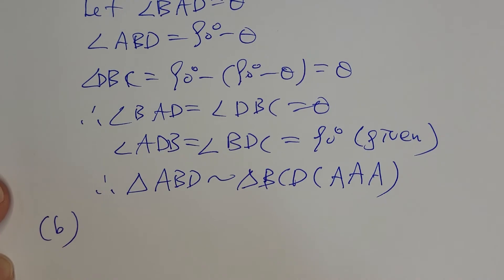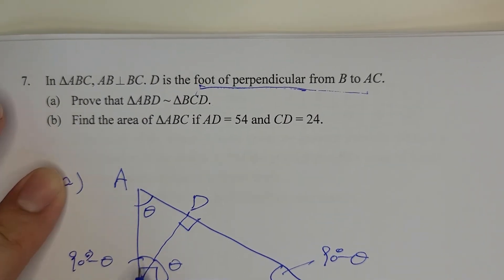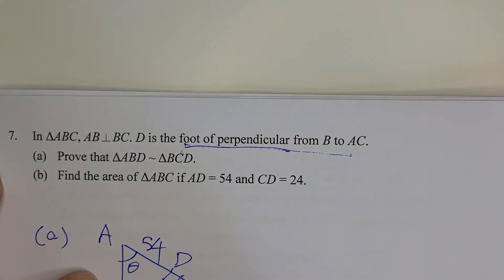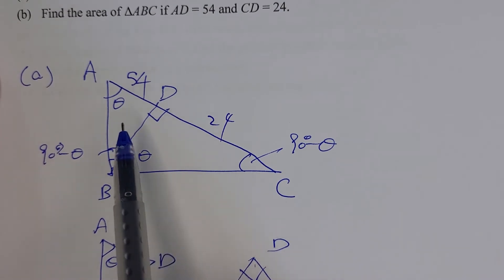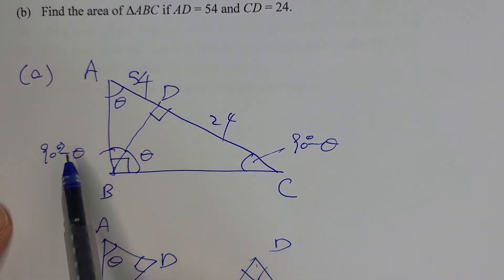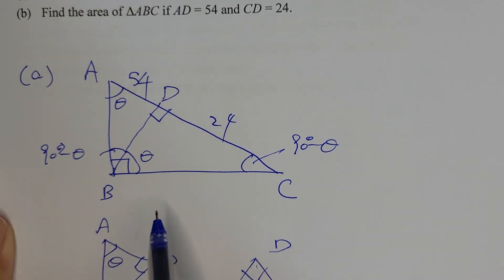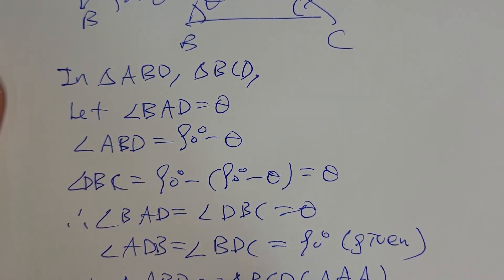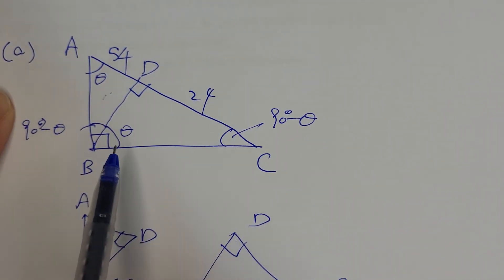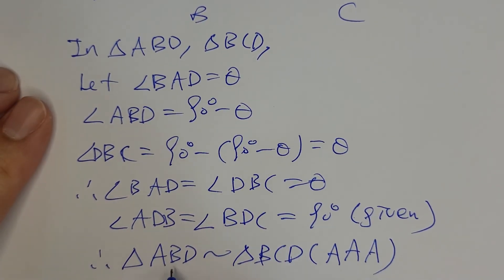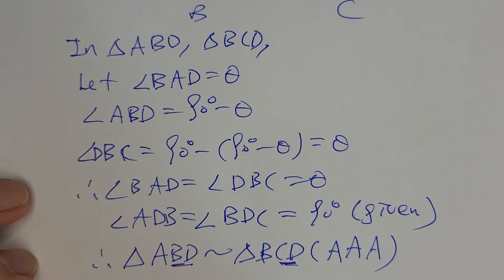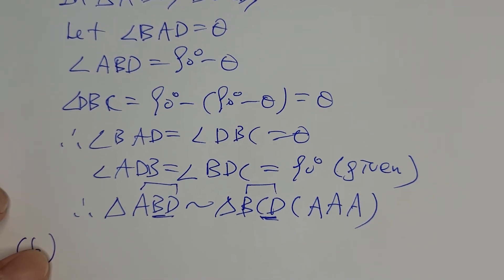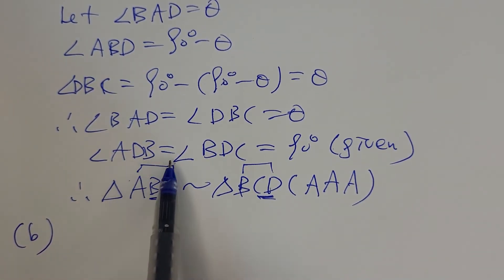Part b: find the area of triangle ABC given AD equals 54 and CD equals 24. If we can find BD, we can find the area. Using corresponding sides of similar triangles, match the order of letters: AD over BD equals BD over CD. This gives us the ratio of corresponding sides.